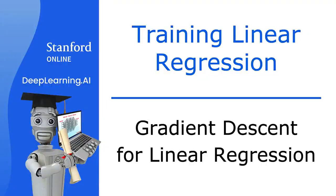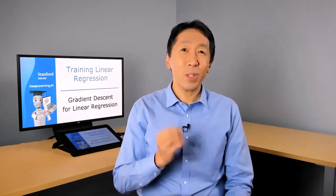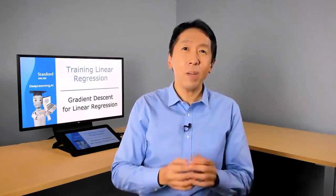So previously, you took a look at the linear regression model, the cost function, and the gradient descent algorithm. In this video, we're going to put it all together and use the squared error cost function for the linear regression model with gradient descent. This will allow us to train the linear regression model to fit a straight line to our training data. Let's get to it.